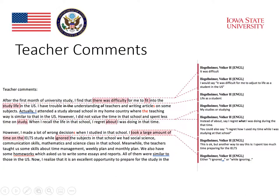It's important to realize that no matter how many mistakes grammar checkers are able to identify, there is always a need for a teacher to go in and indicate errors. If you just look at this first example, the student writes: 'After the first month of university study, I find that there was difficulty for me to fit into the study life in the U.S.' We know what the person wants to say, but I would say something different — 'It was difficult for me to fit into life as a student in the U.S.' That's the kind of feedback that automated systems cannot really provide.